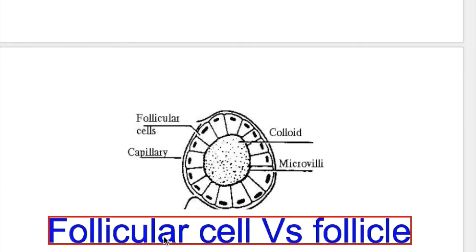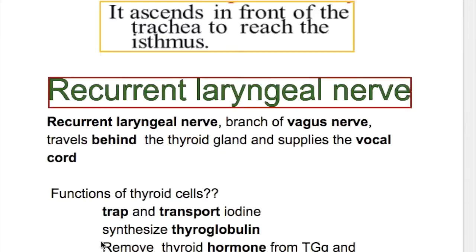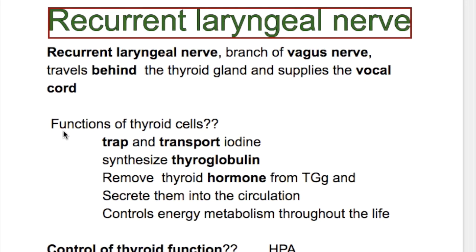What's the difference between a follicle and a follicular cell? A follicular cell is a type of cell in the thyroid gland. A follicle is a spherical structure with a single layer of follicular cells and a lumen in the center containing thyroglobulin, the precursor of thyroxin. Functions of the follicles: one, trap and transport iodine; two, synthesize thyroglobulin; three, remove thyroid hormone from thyroglobulin; four, secrete it into circulation and control energy metabolism throughout life.